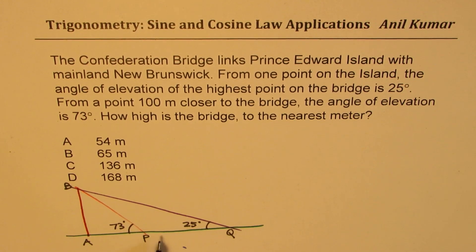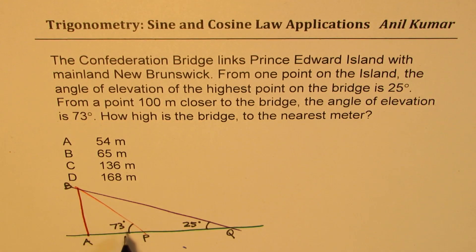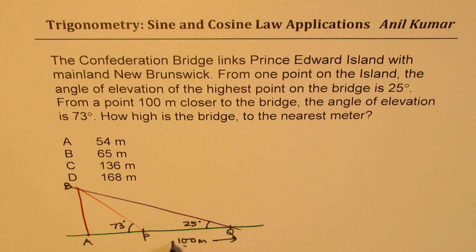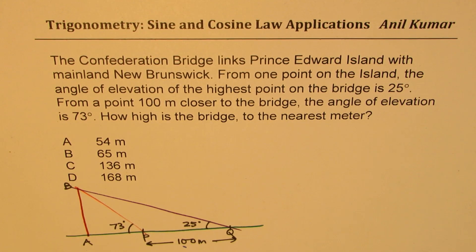Now, some of you who have not done sine law and cosine law can use tan ratios to solve. We are also given this particular distance from P to Q as 100 meters. So that should help you to solve this problem using tan ratios — high distance questions. Now we are going to use sine cosine law to solve this question.